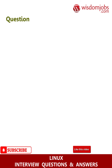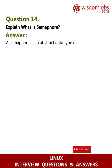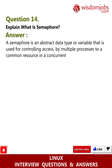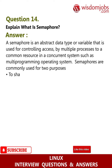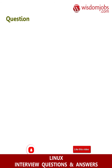Question 14: Explain what is a semaphore. Answer: A semaphore is an abstract data type or variable that is used for controlling access by multiple processes to a common resource in a concurrent system such as a multi-programming operating system. Semaphores are commonly used for two purposes: to share a common memory space and to share access to files.